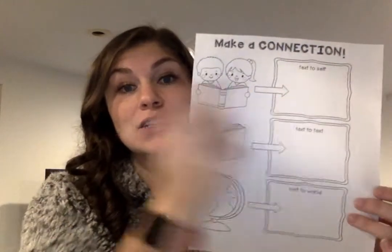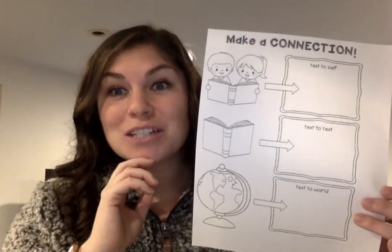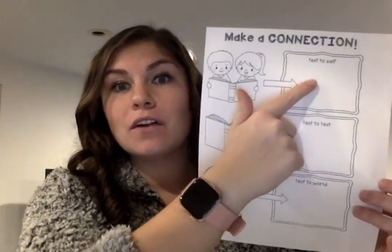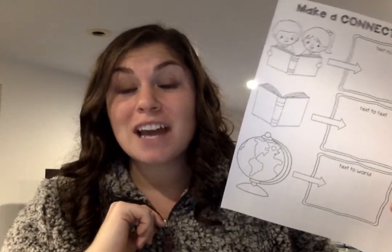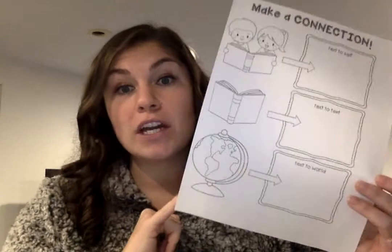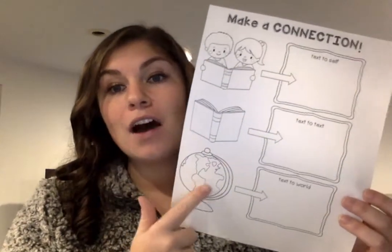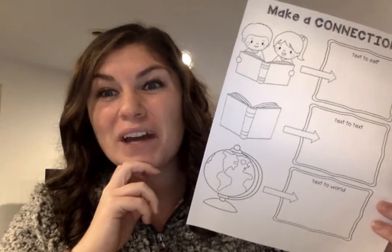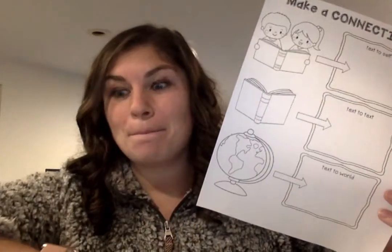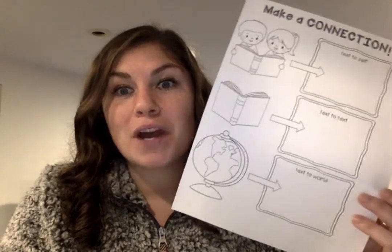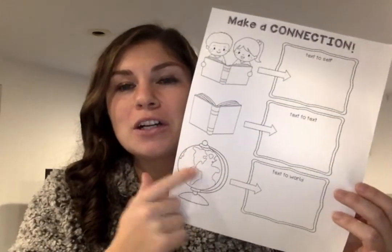We make text-to-text connections — that's when you connect one book to another. We make text-to-self connections, which is when you connect something that's going on in a book to something you have experienced before. And another is text-to-world, that's when you connect something in a book to something that is happening in the world right now. Those ones are a little bit tricky.